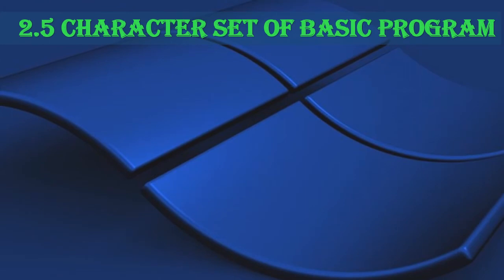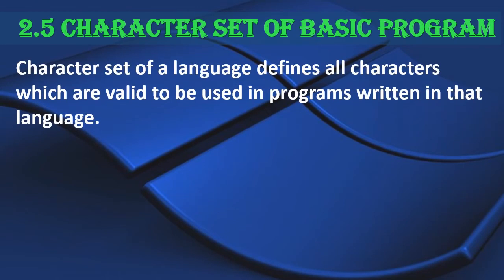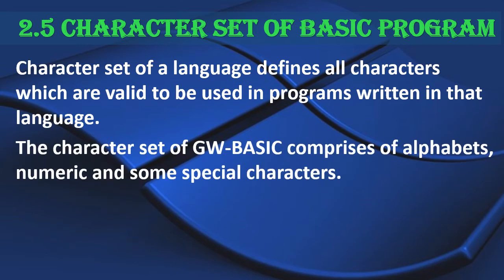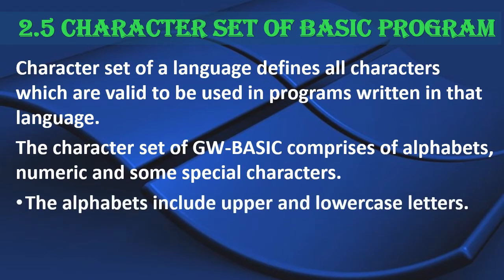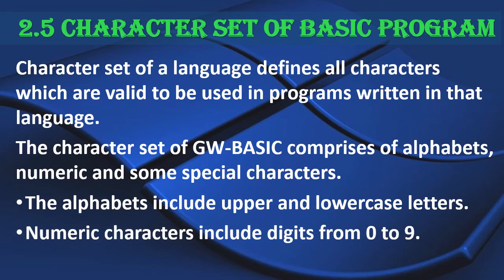Next is the character set of a BASIC program. The character set of a language defines all characters which are valid to be used in programs written in that language. The character set of GW BASIC comprises alphabets, numeric characters, and some special characters. Alphabets include uppercase and lowercase letters A to Z. Numeric characters include digits from 0 to 9.